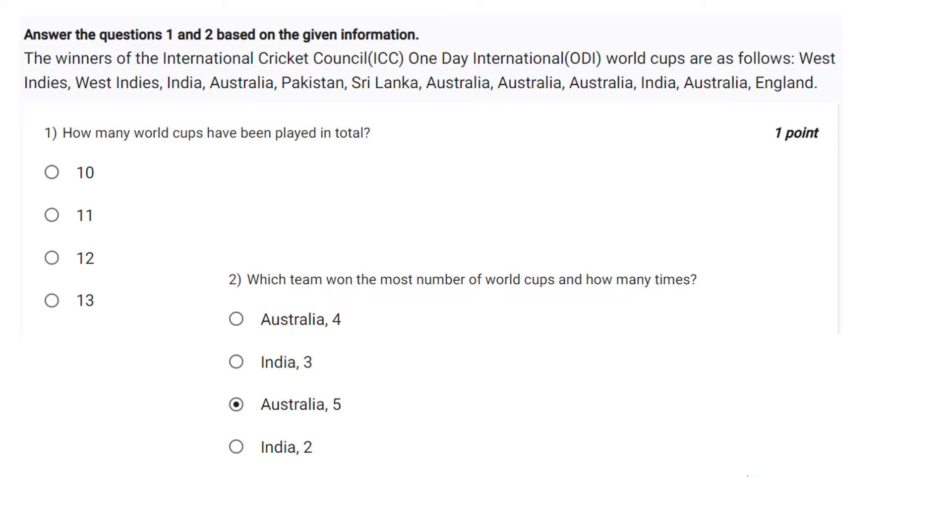Let's start the activity, question 2.1. Answer the questions one and two based on the given information. The winners of the International Cricket Council One Day International World Cups are as follows: West Indies, West Indies, India, Australia, Pakistan, Sri Lanka, Australia, Australia, Australia, India, Australia, England. How many World Cups have been played in total?